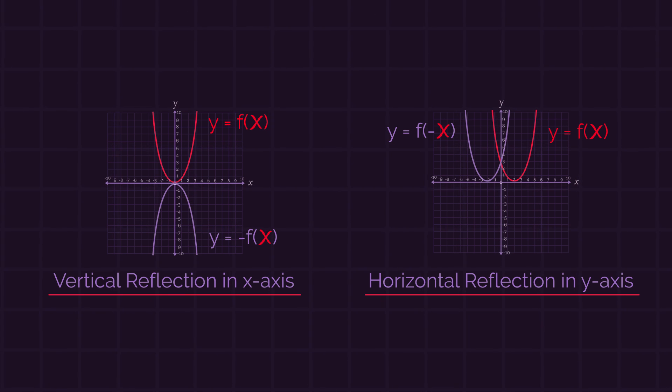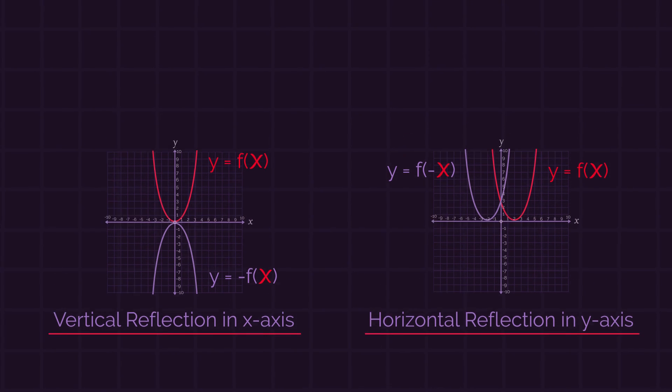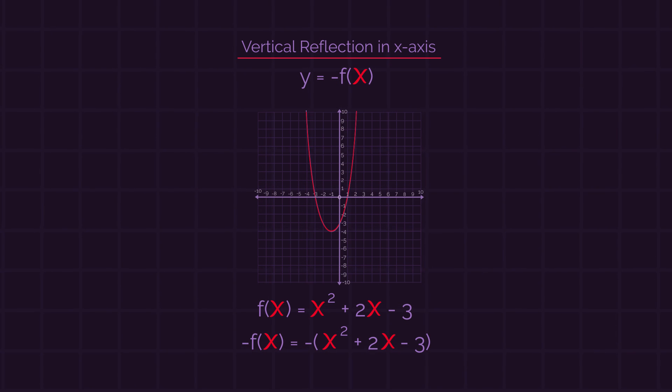So let's have a look at reflections. If we have a function with this equation, to reflect it vertically, so in the x-axis, we apply a negative to the whole equation, so outside the brackets.